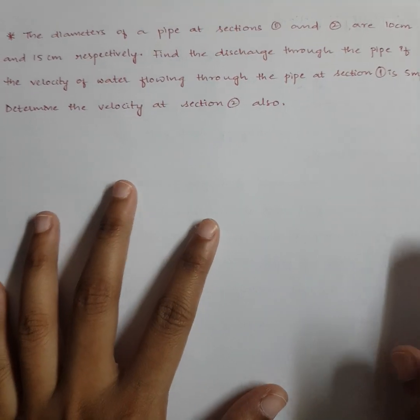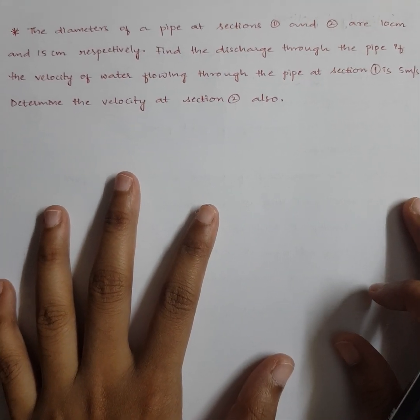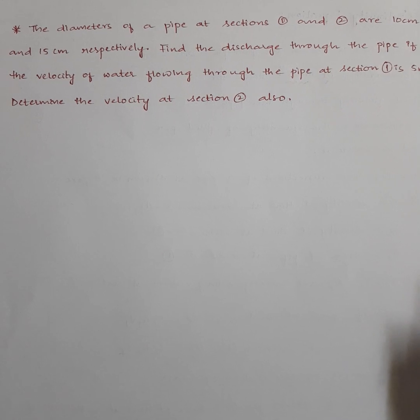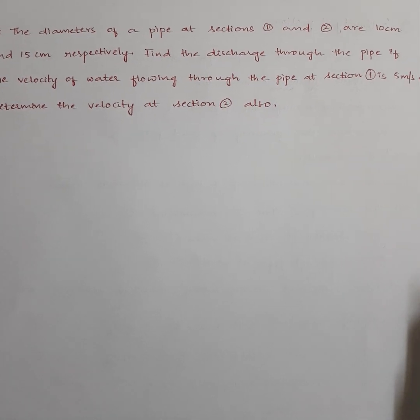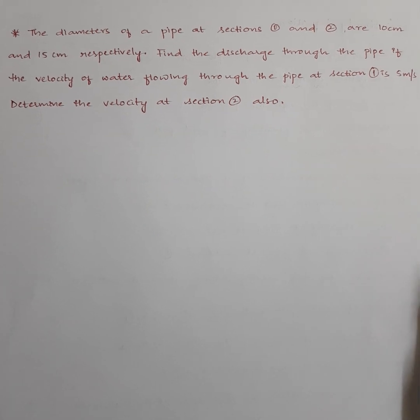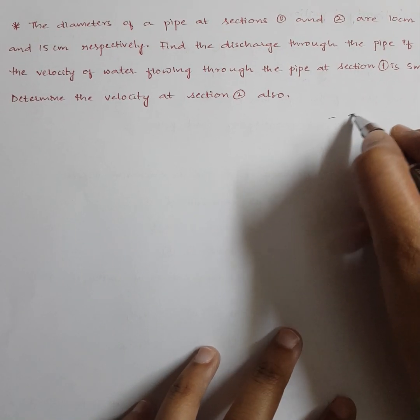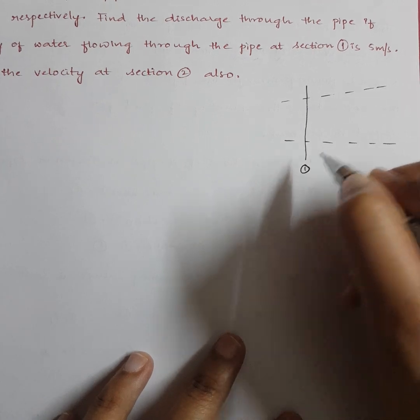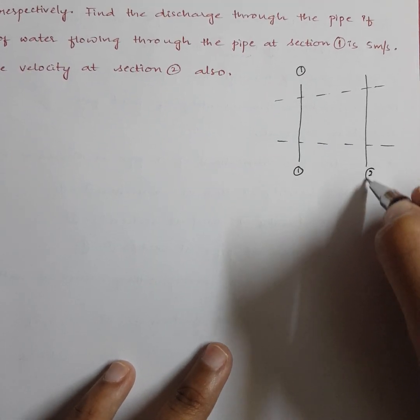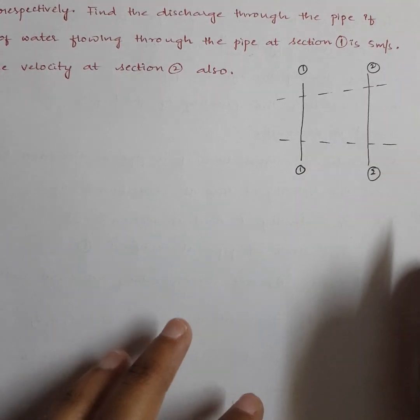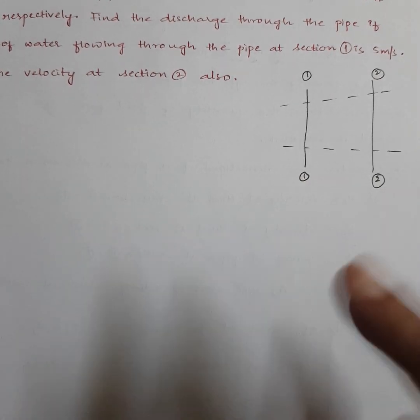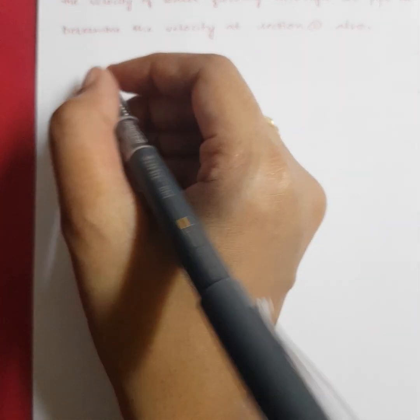Now let us solve a problem related to the continuity equation in one dimension. The diameters of the pipe at sections 1 and 2 are 10 cm and 15 cm respectively. Find the discharge through the pipe if the velocity of water at section 1 is 5 m/s, and determine the velocity at section 2. I will draw the diagram with section 1 at the inlet and section 2 at the outlet.